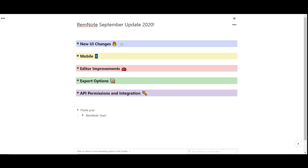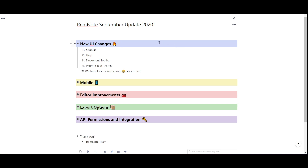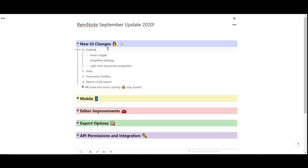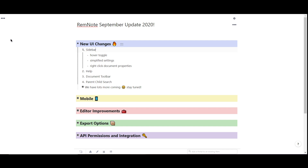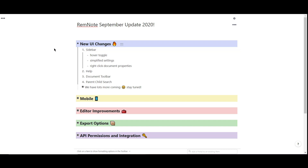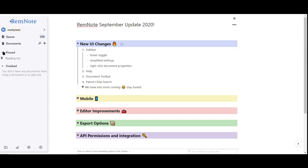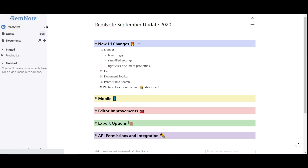We're starting to roll out our first batch of UI changes that we think will make your RemNote experience more enjoyable. Let's start with the sidebar. Alongside a new polished look, the sidebar can now be accessed with just a hover of your cursor. And to toggle it open, use the arrow symbol by your account name.